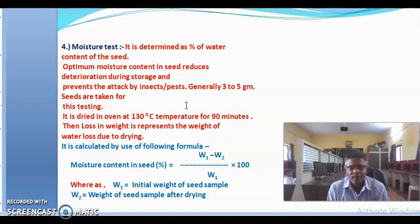Moisture test determines the percentage of water content in seed, that is known as seed moisture. Seed moisture is defined as percentage of water contained in the seed. The optimum moisture content in seed reduces deterioration during storage and prevents the attack of pest, disease, and insects. Generally, 3 to 5 grams of seeds are taken for seed testing. Seeds require near about 12 to 14% moisture content for better quality seed.